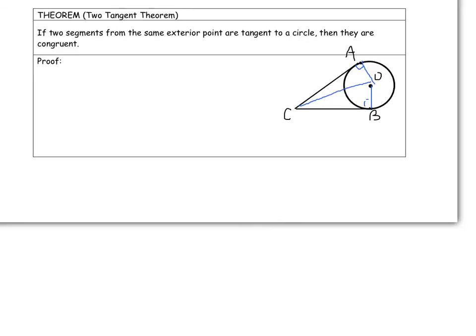So I've created two right triangles here. I have triangle AOC and triangle BOC, and they're both right triangles because I know that when I connect the radii of a circle to the tangent line, it meets at a right angle.